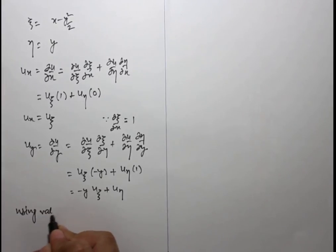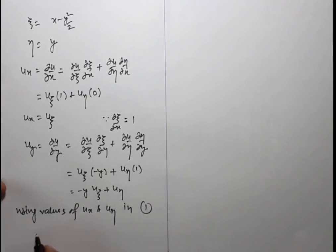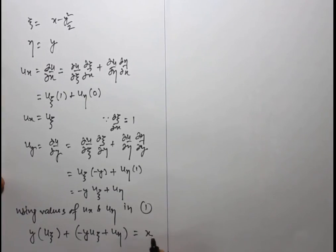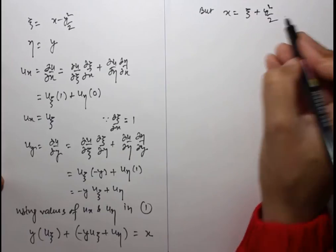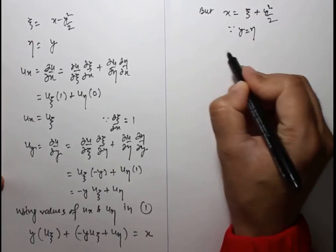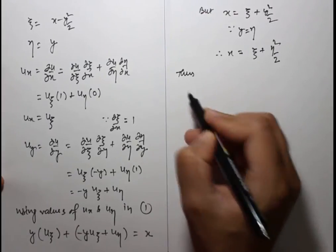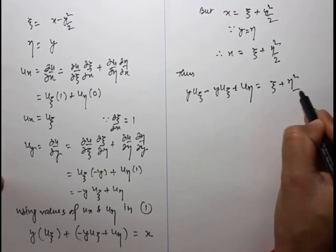Substituting into equation 1: y·u_x + u_y = x becomes y·u_ξ + (-y·u_ξ + u_η) = x. Since y = η, x = ξ + η²/2.